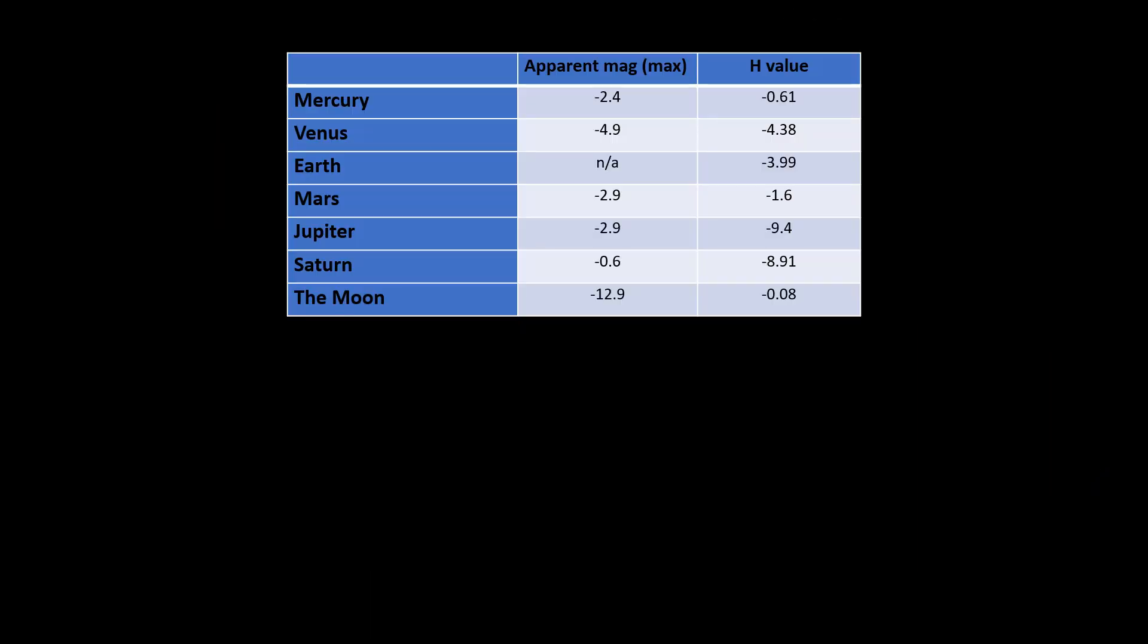And here's the h-values of some solar system objects. Jupiter and Saturn have the brightest h-values because they are the largest planets.